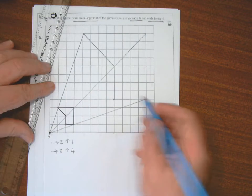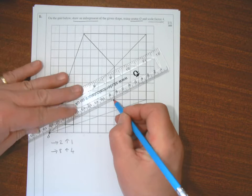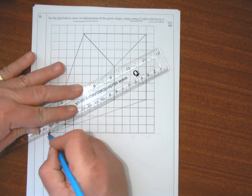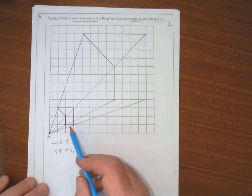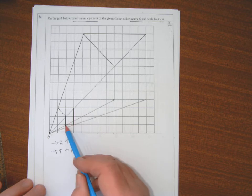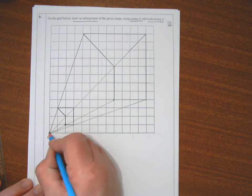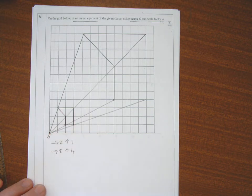You can see that when I join the points from the big shape through the self-correspondent point on the smaller shape, they actually all come through and meet at the center. And that's what a center is.